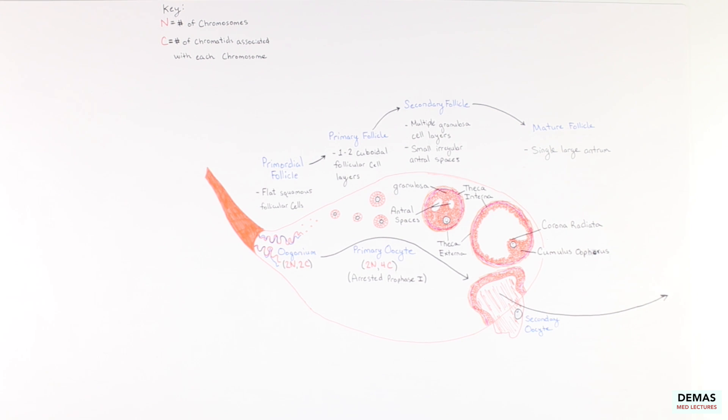The secondary oocyte continues into meiosis II and then is arrested in metaphase II. Since the secondary oocyte has completed meiosis I, the genetic information has been reduced by half, meaning the secondary oocyte would be 1N2C in comparison to the 2N4C that was the primary oocyte. This transition from primary to secondary oocyte occurs right before the oocyte is released from the mature follicle during ovulation.